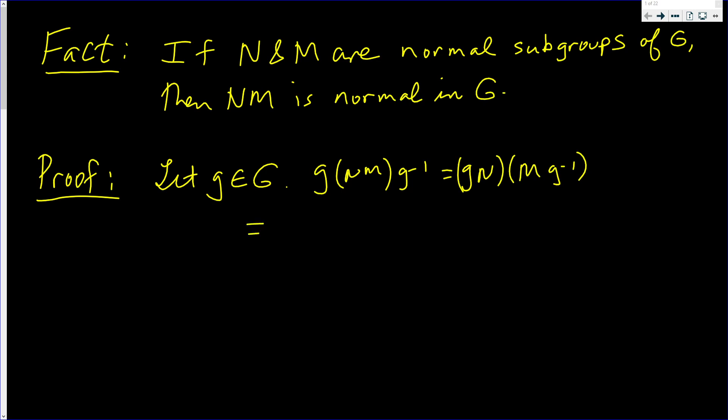But that's the same as gN times, I can switch that, times g inverse M. But this is the same as gN times g inverse times M, using the associative law.